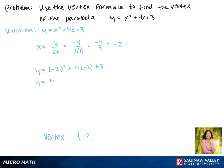Negative 2 squared is positive 4. 4 times negative 2 is negative 8 and then plus 3. Working this out we get negative 4 plus 3 which means y equals negative 1.